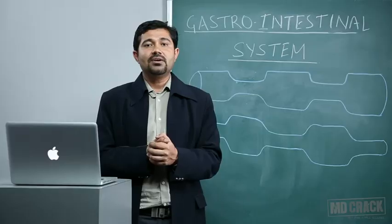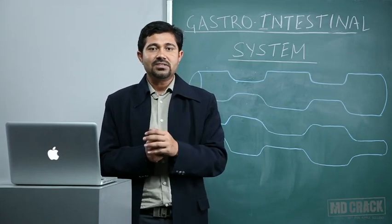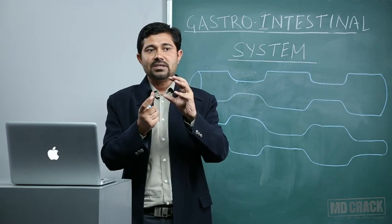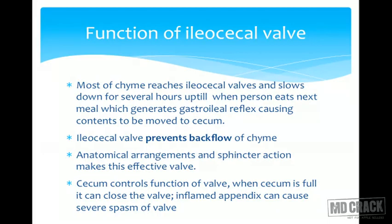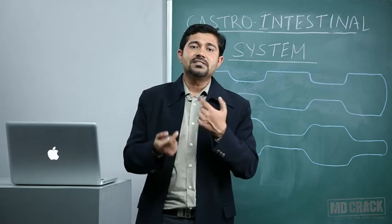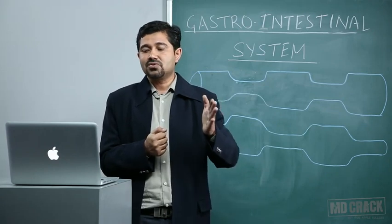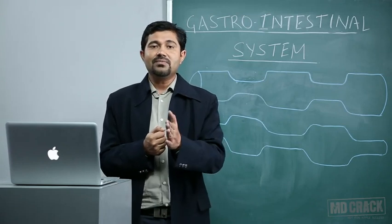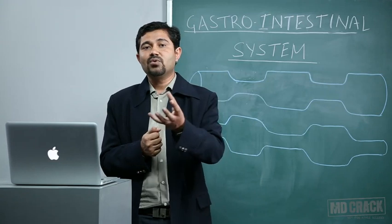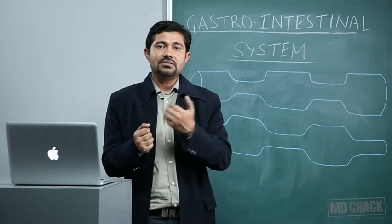At the end of the ileum lies the ileocecal valve. The anatomy of the ileocecal valve is such that it protrudes into the cecum and acts as an effective valve. Most of the chyme will reach the ileocecal valve and remain in the last part of the ileum until the next meal. The gastro-ileal reflex will then cause further emptying of the ileum, moving chyme from the ileocecal valve into the cecum and then into the ascending and transverse colon.